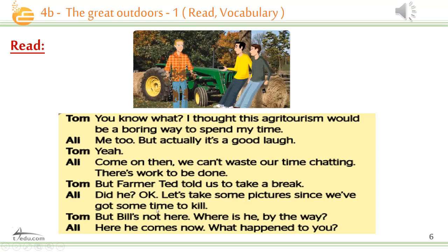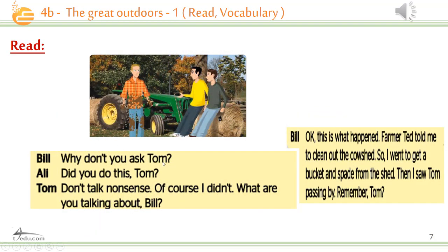'Let's take some pictures since we've got some time to kill.' So they have a lot of time and want to have fun and take pictures. 'But Bill's not here — where is he, by the way?' They're asking about Bill. 'Here he comes now. What happened to you?' He's full of mud. 'Why don't you ask Tom?' Bill is blaming Tom. Let's see why. 'Don't talk nonsense, of course I didn't. What are you talking about, Bill?' 'This is what happened — Farmer Ted told me to clean out the cowshed, so I went to get a bucket and spade. Then I saw Tom passing by.' So now he's telling him why he's blaming him.